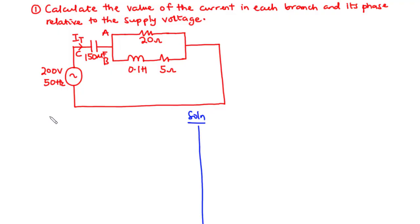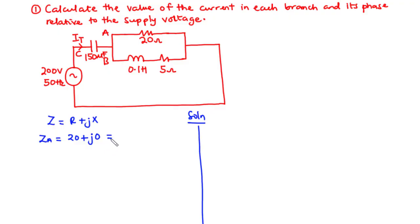The impedance Z is given by R + jX, where R is the resistance and X is the reactance. This can be the capacitive reactance or the inductive reactance. Now the impedance in branch A is solely due to a resistor, so that's going to be 20 + j0. Converting this to polar form, we have 20∠0°. This is the value of impedance in branch A.